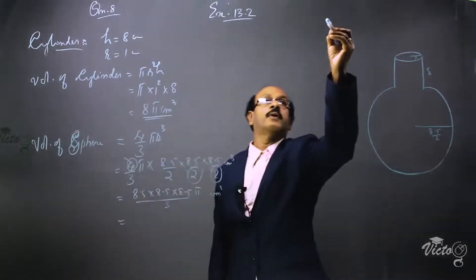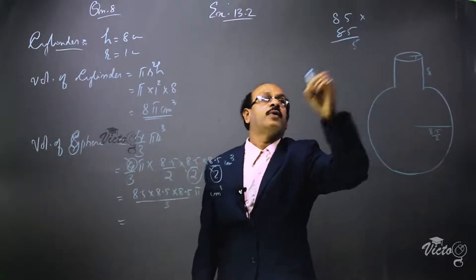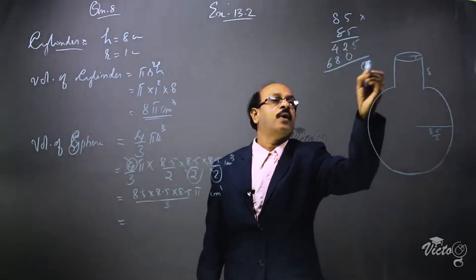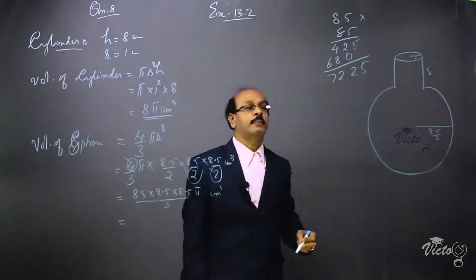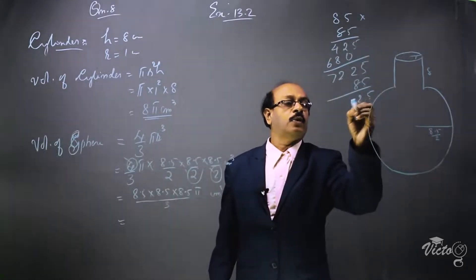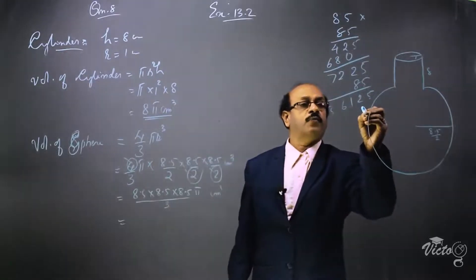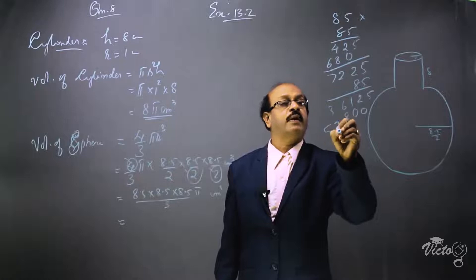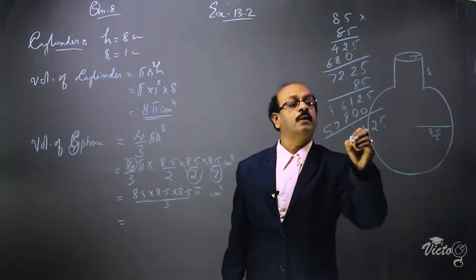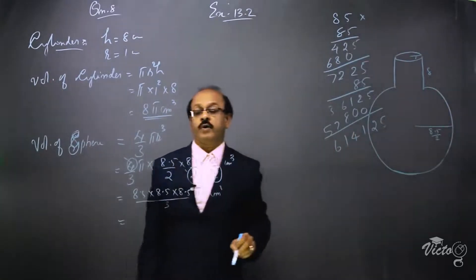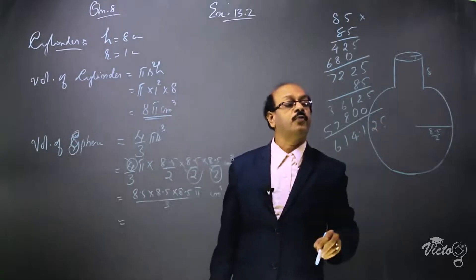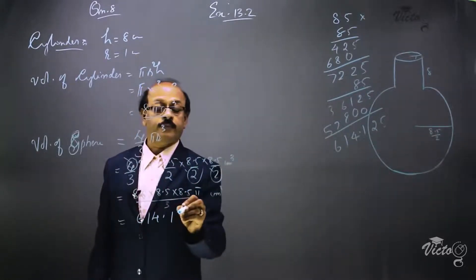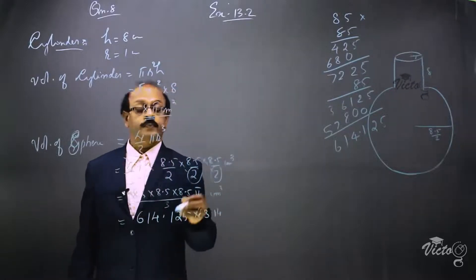We calculate 8.5 cubed by multiplying 85 × 85, which gives 7225, then multiplying by 85 again. Working through the arithmetic: 85 × 85 = 7225, and 7225 × 85 = 614125. Placing three decimal places gives 614.125. So the sphere volume expression becomes 614.125 × pi divided by 3.